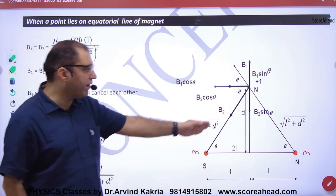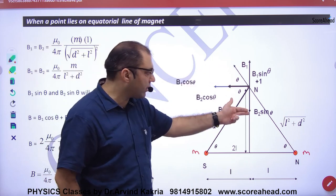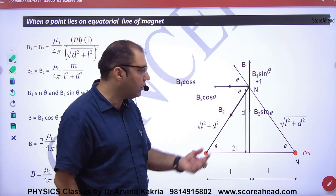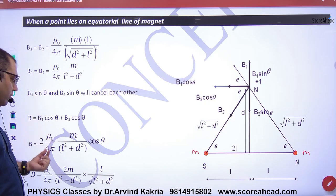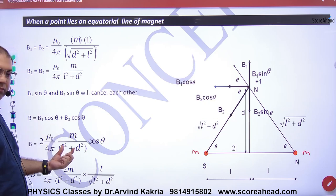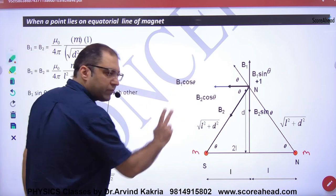B2 value will be exactly the same. B1 and B2 will be the same. The vector components will cancel. Net B value will be twice. 2 into mu naught by 4 pi, M by under root of L square plus d square whole square, into cos theta.